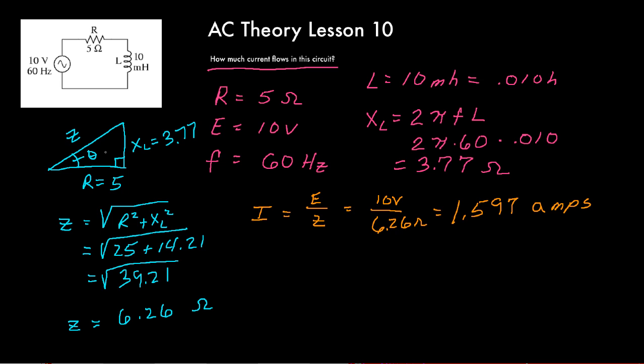If we use the cosine function, cosine of theta equals adjacent over hypotenuse. In this case, R over Z, which will always be the case when we're dealing with an impedance triangle. So the cosine of theta is R over Z. We could take 5 ohms and divide that by the 6.26 that we got. 5 divided by 6.26 gives us an answer of 0.7987. That's the cosine of theta, but that's not what theta is.